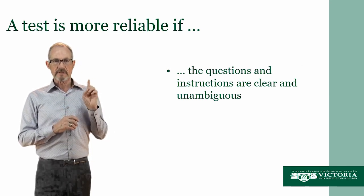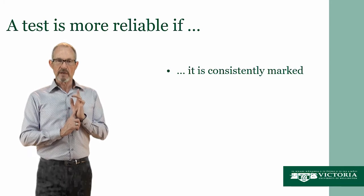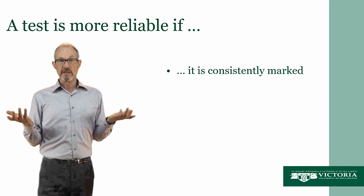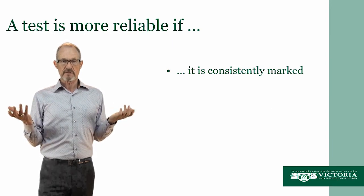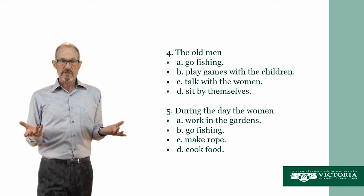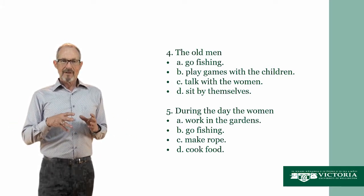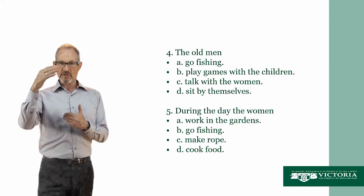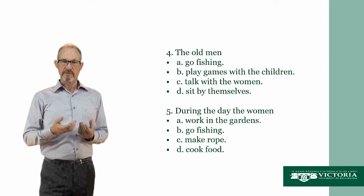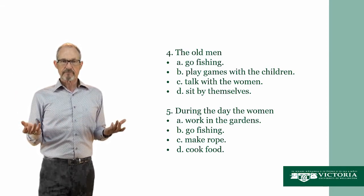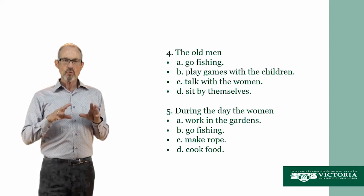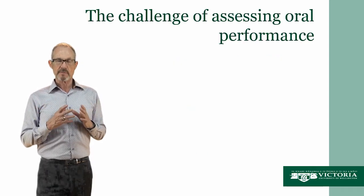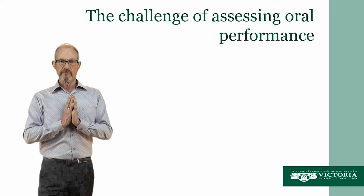The third one is this: a test is more reliable if it is consistently marked. Some types of tests are very easy to achieve this — a good example is multiple-choice questions. It's very easy to ensure consistency of marking; the answers are a simple letter, every teacher has the same list of letters and can mark it in the same way. However, not all testing is as easy to mark as that. One that poses particular challenges is the challenge of assessing oral performance.